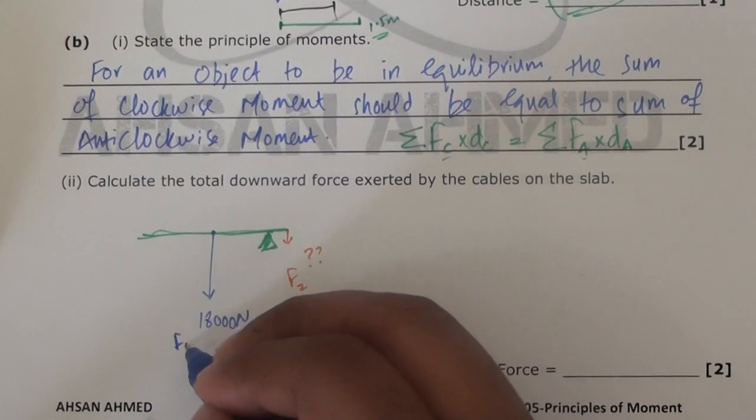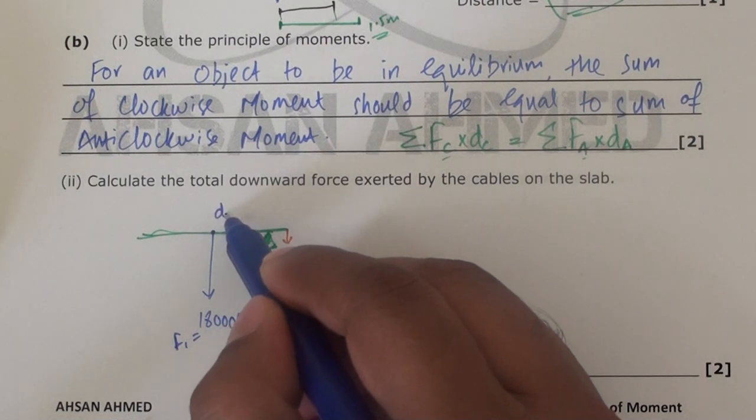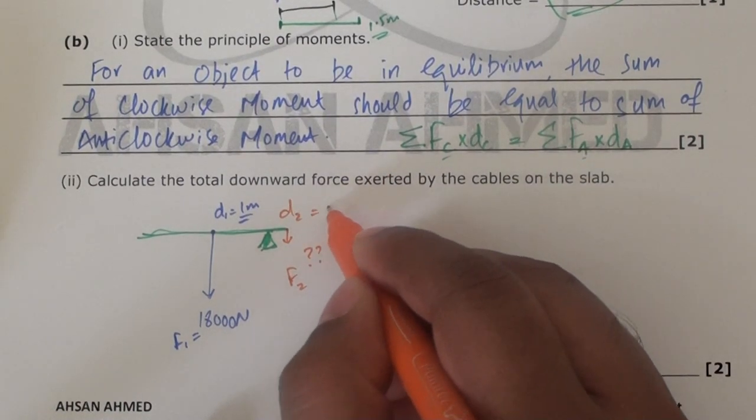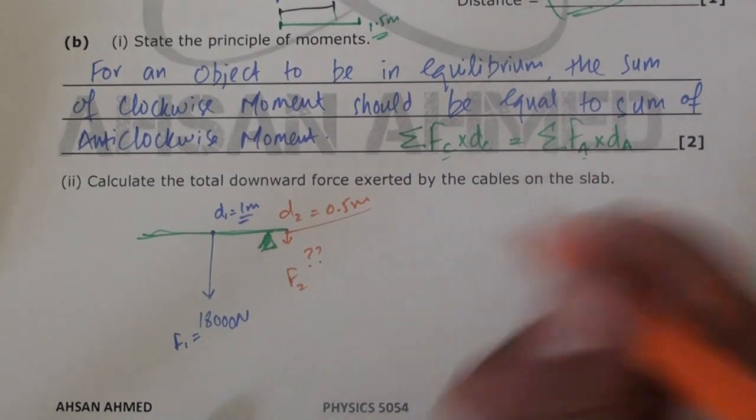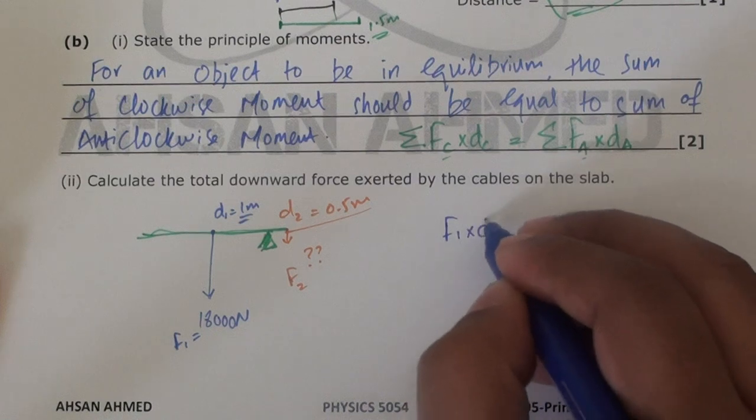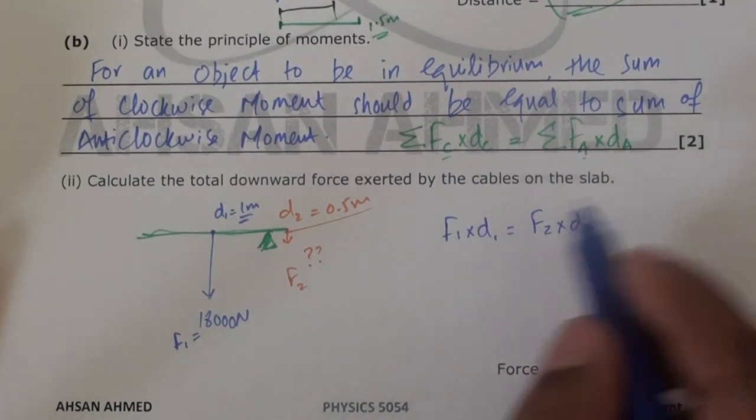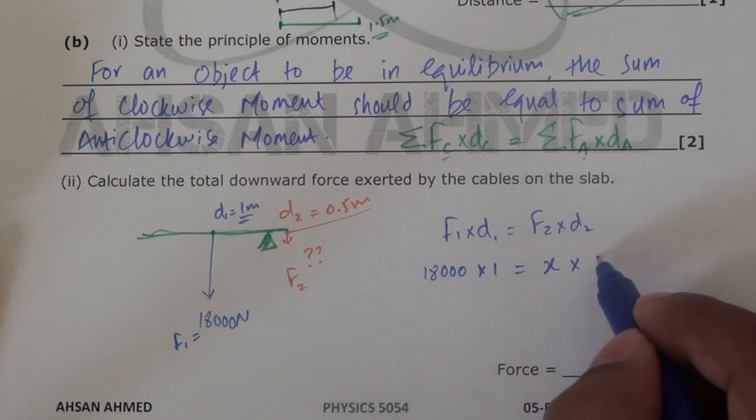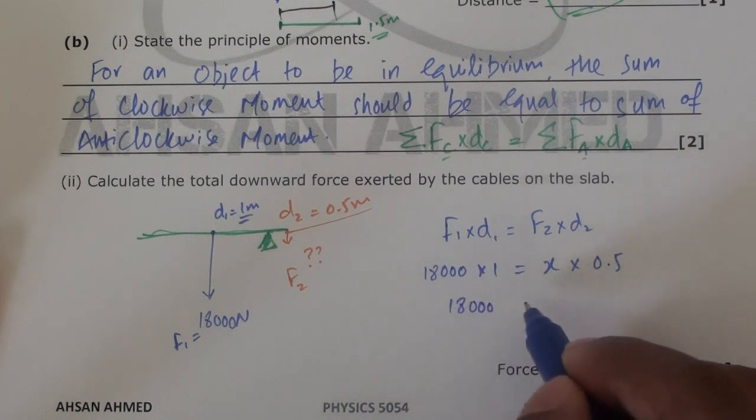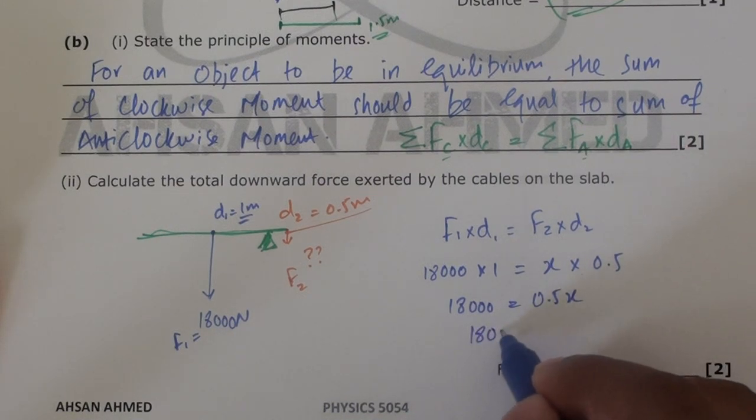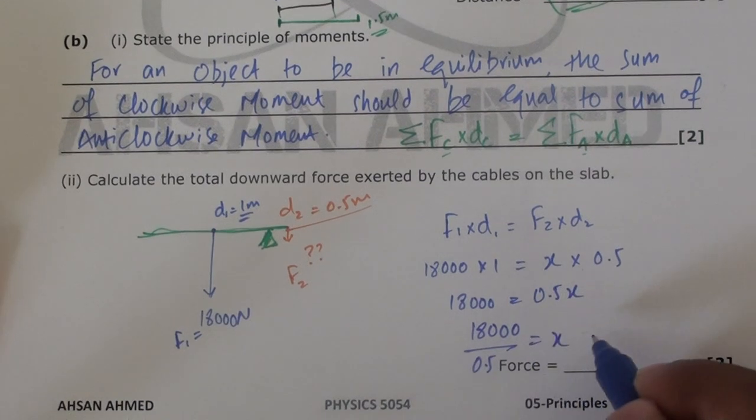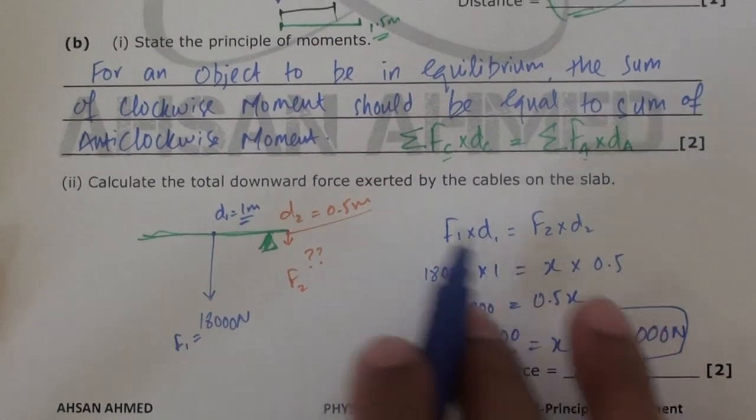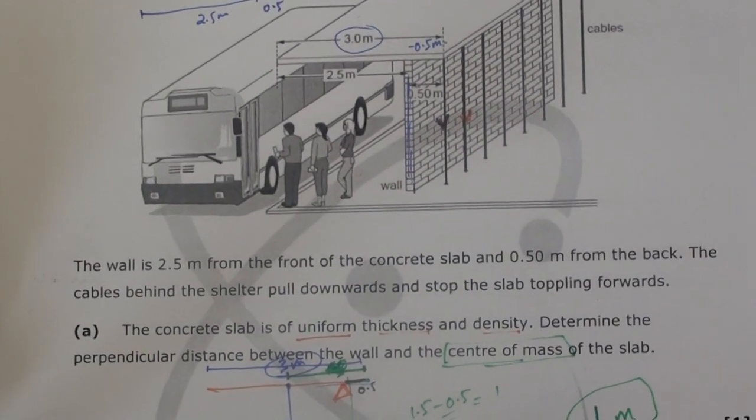Right, we don't know that. Let's call it F1. We know that the distance d1 is 1 meter. We calculated that in the previous part. And for d2, this distance here, d2 is 0.5 meters, which was given in the question. Now let's simply apply principle of moments, and that is F1 into d1 equals F2 into d2. Put in the values: F1 is 18,000 multiplied by d1 is 1. F2 we don't know, times d2 is 0.5. So it's 18,000 equals 0.5x. Cross multiplication, so we get 18,000 divided by 0.5, and we get 36,000 newtons. And that is our answer.